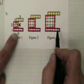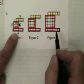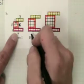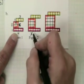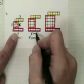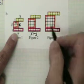1, 2, 3, 4, 5, 6. So remember, in place of the figure number, I'm going to put the letter X. And then I'm going to say how many more or how many less that represents. X plus 3.